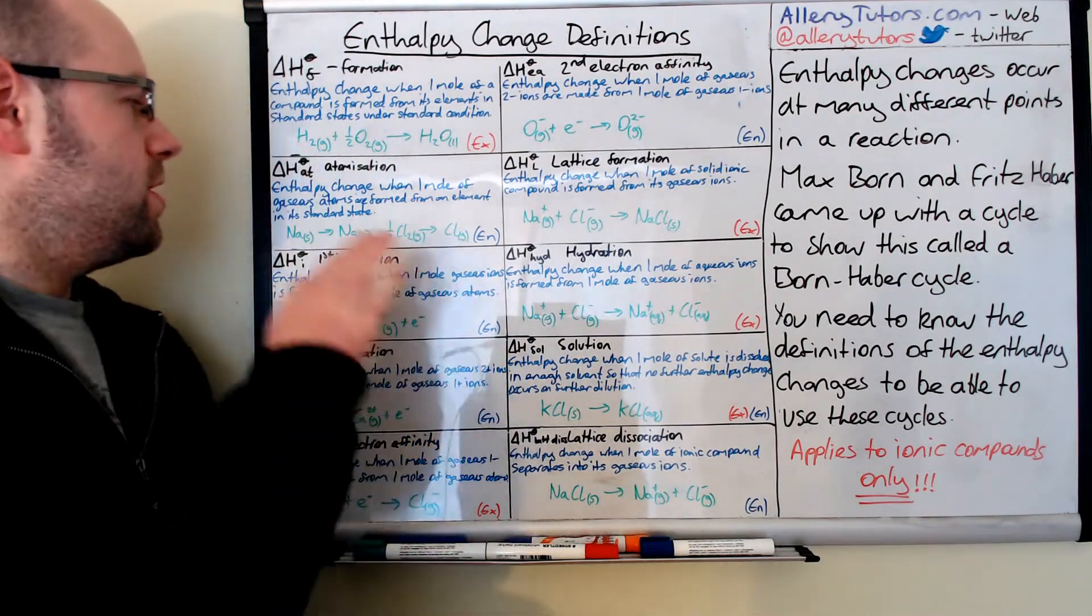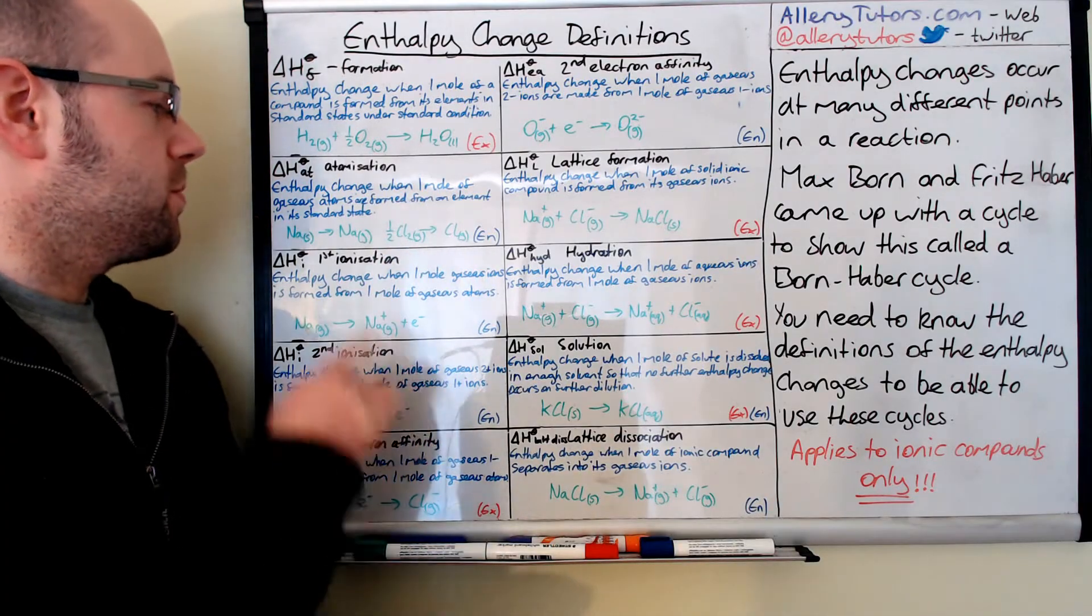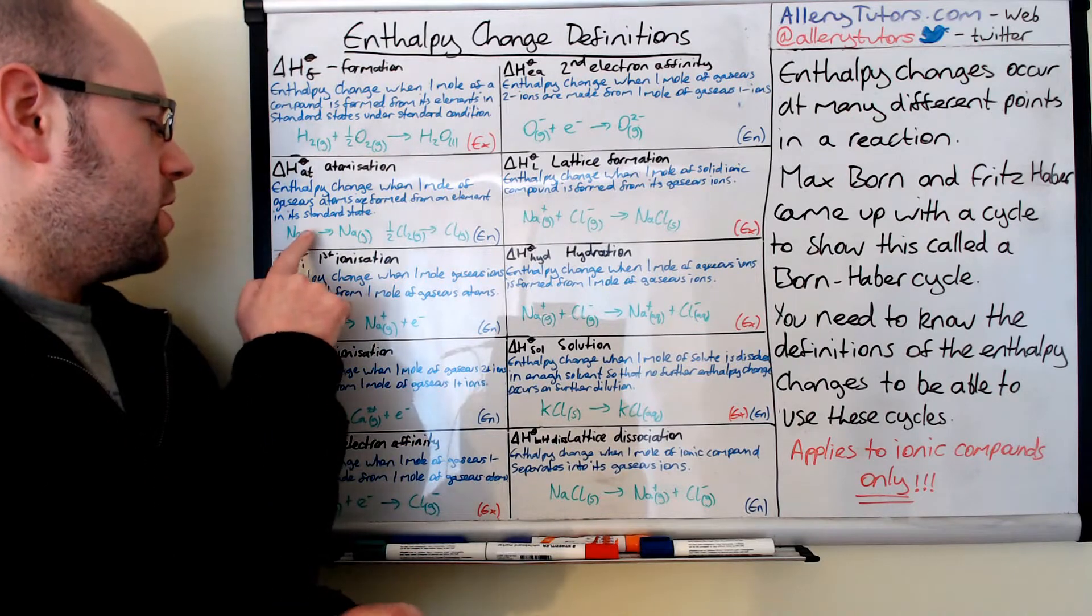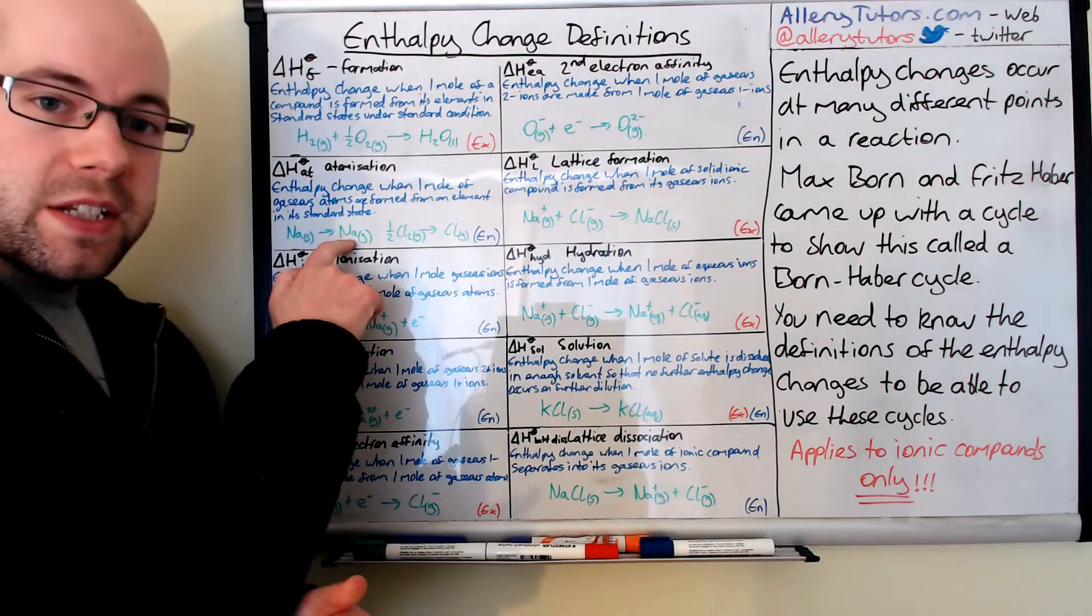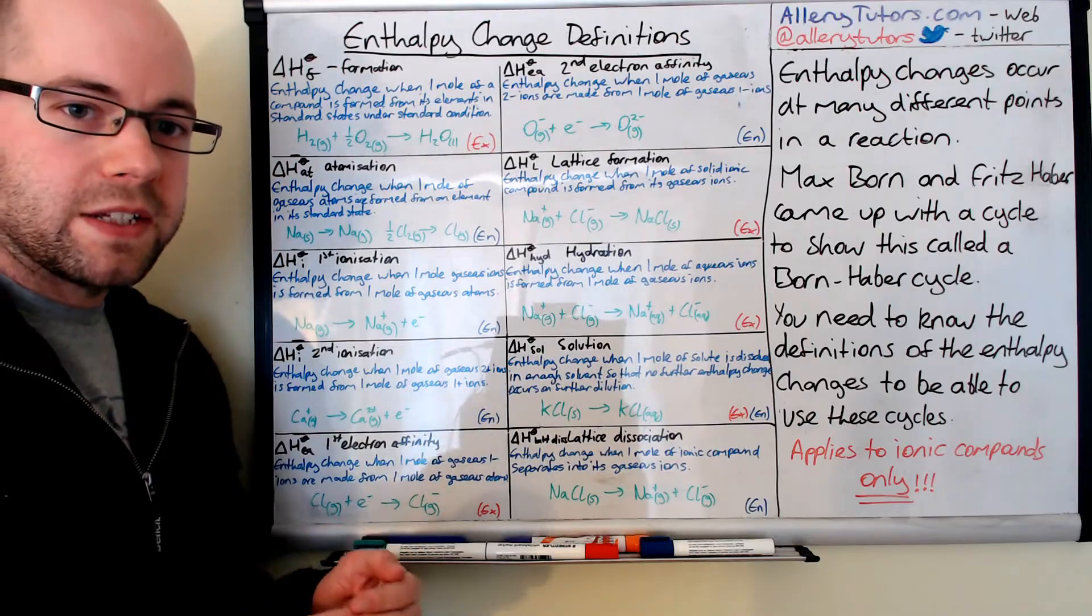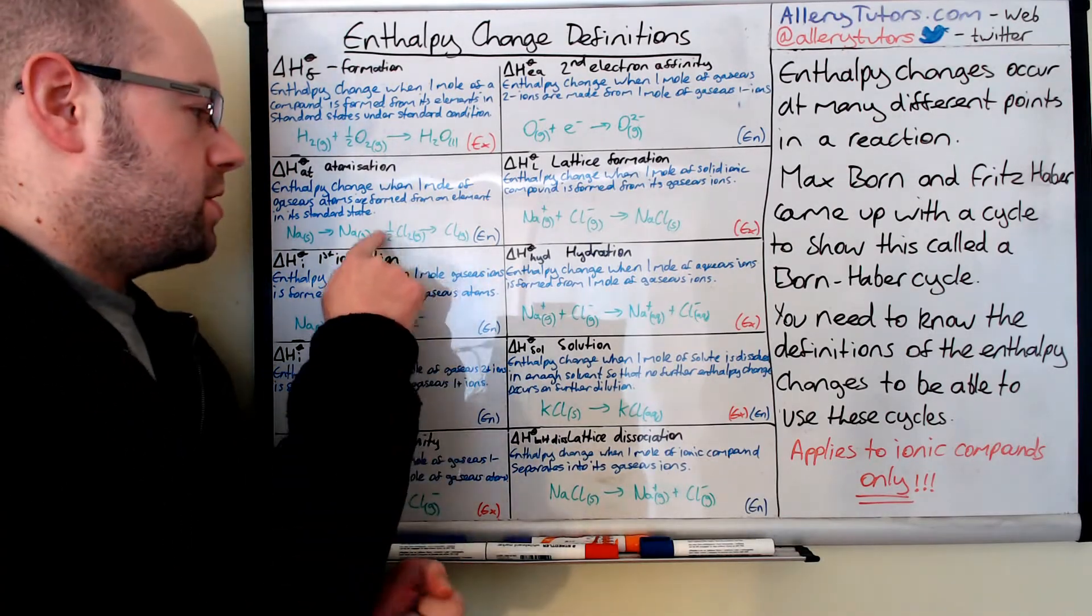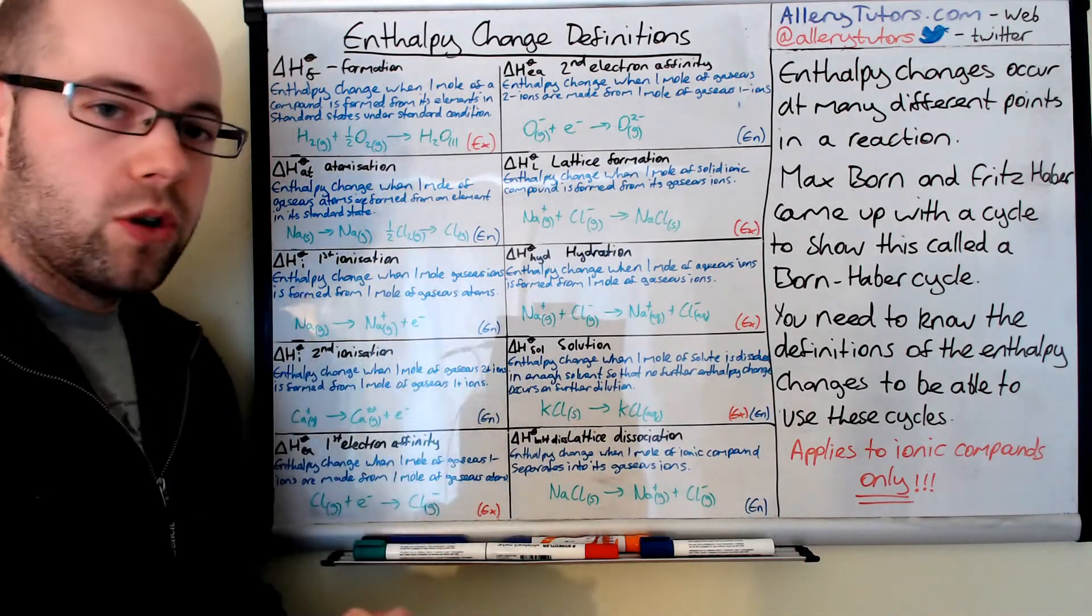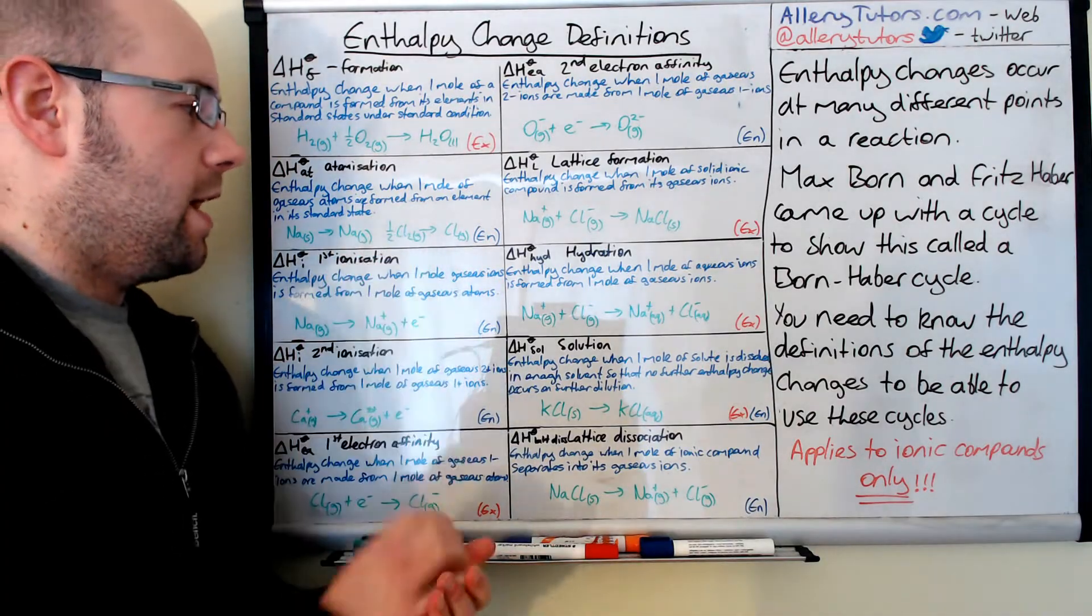Enthalpy of atomization. This is the enthalpy change when one mole of gaseous atoms are formed from an element in its standard state. You can see here we've got one mole of sodium being formed in a gaseous form, and this is sodium in its standard state, which is a solid. Here's another example: half Cl2 forming chlorine gas.